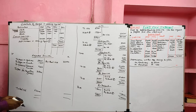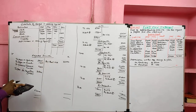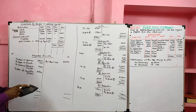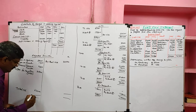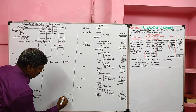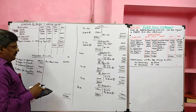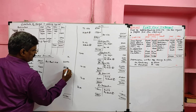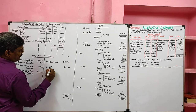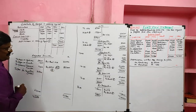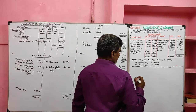Now balancing the adjusted profit and loss account to get funds from operations. Debit side total: 38,400 plus 1,200 plus 9,000 plus 32,700 plus 62,400 equals 1,43,700. Minus opening balance 58,500, so funds from operations equals 85,200. This goes to the sources side.